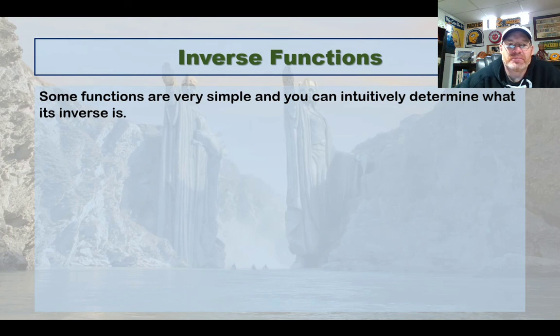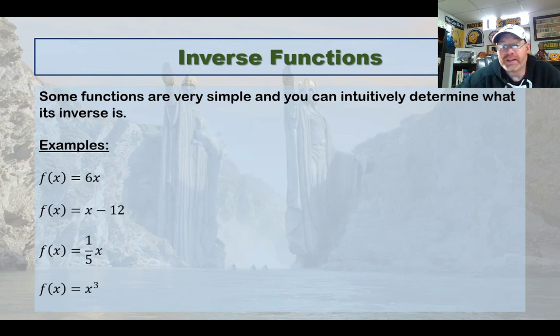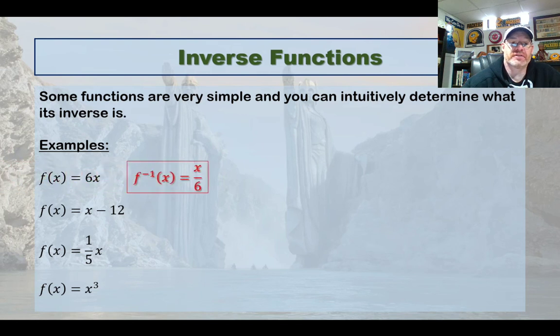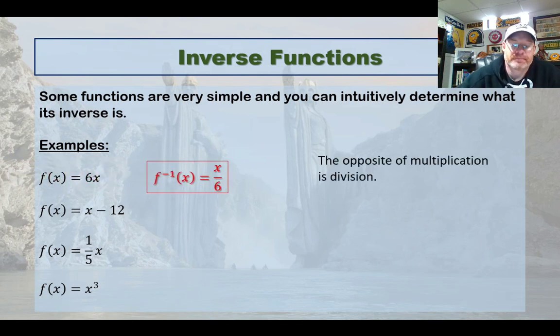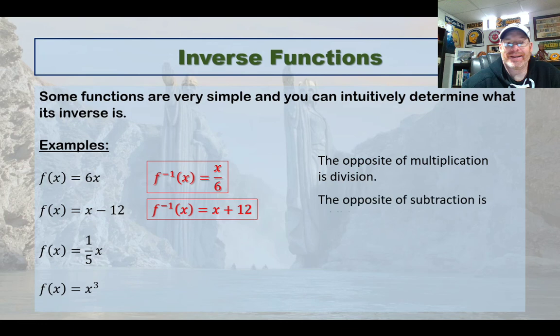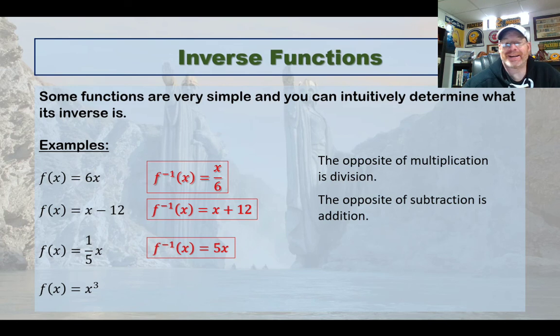Some functions are real simple and you can intuitively determine what the inverse is. In each of these situations, there's only one operation occurring. Intuitively you know that if f(x) is 6 times x, well, the opposite of multiplication is division, so your inverse is x divided by 6. If the original is subtracting 12, then the inverse is going to be adding 12. You can think of that one-fifth x as being x over 5 or x divided by 5, which means their inverse is going to be 5 times x.